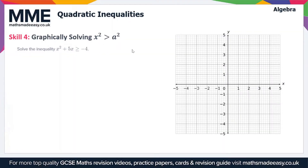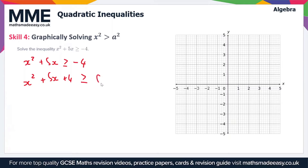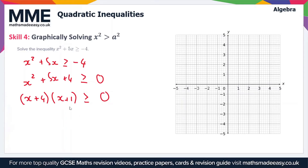Now let's look at an example where x squared is greater than a squared. Here we've got x squared plus 5x is greater than or equal to minus 4. To factorize, we need all values on one side, giving x squared plus 5x plus 4 is greater than or equal to 0. We're looking for two values which multiply to give 4 and add to give 5, which gives us (x plus 4)(x plus 1) greater than or equal to 0.